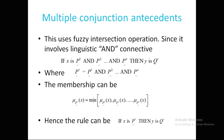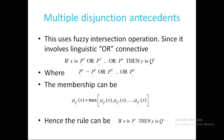Multiple disjunction antecedents use the union operation. The rule is: if x is P1 or P2 or ... or Pn, then y is Qr. Here Pr = P1 OR P2 OR ... OR Pn, and the membership value is: μ_Pr(x) = max(μ_P1(x), μ_P2(x), ..., μ_Pn(x)). The final simplified rule is: if x is Pr then y is Qr.